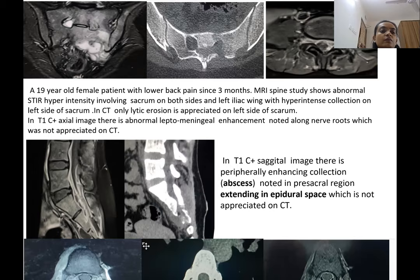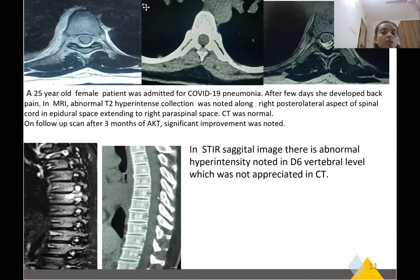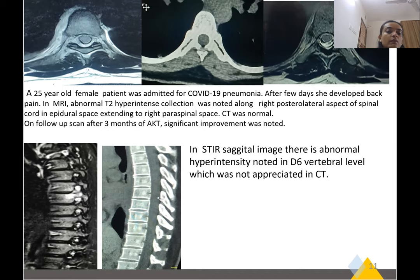Another case: a 25-year-old female patient admitted for COVID-19 pneumonia who after a few days developed back pain, and MRI was done. Abnormal STIR hyperintense collection was noted along the right posterior aspect of the spine, with epidural collection extending into the right paraspinal region. The CT was normal, and follow-up scan after three months of anti-Koch's therapy showed significant improvement. On STIR sagittal image, there is abnormal hyperintensity at the D6 vertebral level which was not appreciated on CT.